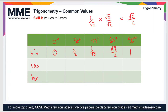Moving on to the cosine function: cos of 0° is 1, the peak of the cos graph. Cos of 30° is root three over two. Cos of 45° is also one over root two. Cos of 60° is one half, and cos of 90° is 0. You might have spotted that cosine and sine take the same values just in the opposite order for these particular angles.